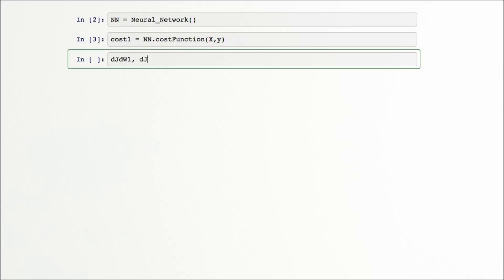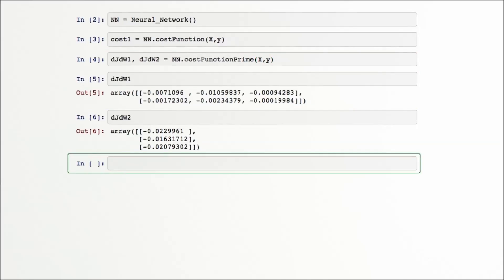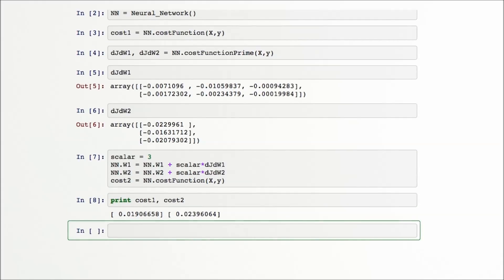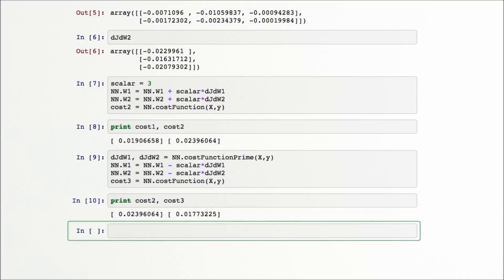So how should we change our w's to decrease our cost? We can now compute dj dw, which tells us which way is uphill in our 9-dimensional optimization space. If we move this way by adding a scalar times our derivative to all of our weights, our cost will increase. And if we do the opposite, subtract our gradient from our weights, we will move downhill and reduce our cost. This simple step downhill is the core of gradient descent, and a key part of how even very sophisticated learning algorithms are trained.